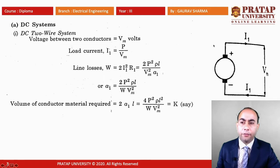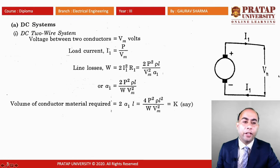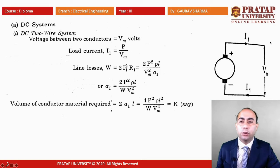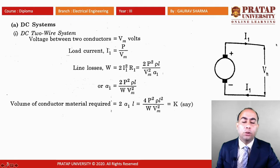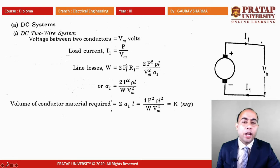First we look at the DC system. In the DC two wire system, the current flow is I1 and the voltage between the two terminals is VM. So the voltage between two conductors is VM volts and the load current I1 is equal to P divided by VM. The line losses are calculated by I squared R. Since we have two conductors, the loss is 2·I1²·R1, where I1 is the current and R1 is the resistance of the conductor.